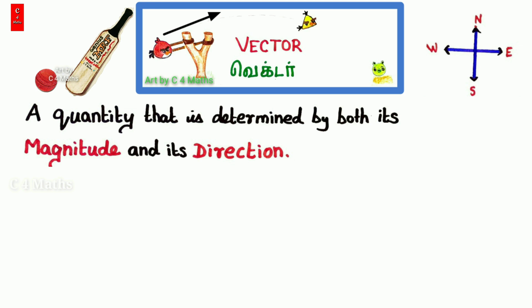A vector has both a numerical value and a direction. If direction is present along with the numerical value, it is a vector quantity.